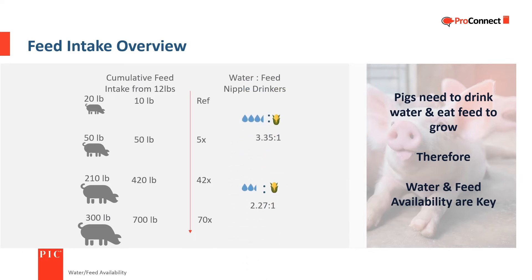Ample water must be available at all times. If water access is limited, feed consumption will be reduced. This is especially important for small pigs, since they drink more water per pound of feed consumed than larger pigs.